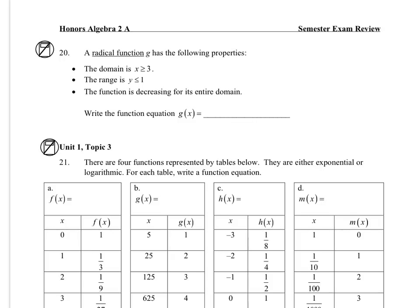We have the following properties. Domain is x is greater than or equal to 3, and the range is less than or equal to 1. So it's going to look like that. So let's just write a function, so this one went to the right 3, up 1, and has been reflected over the x-axis.